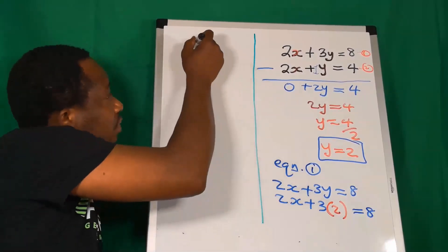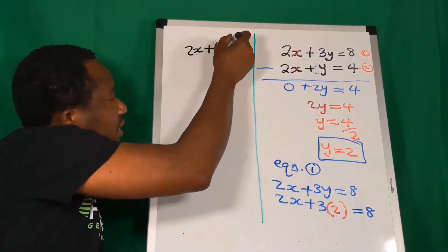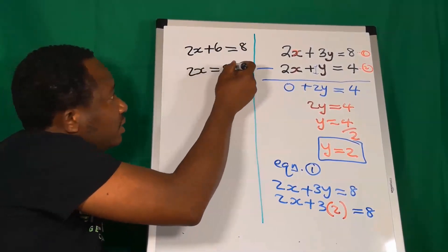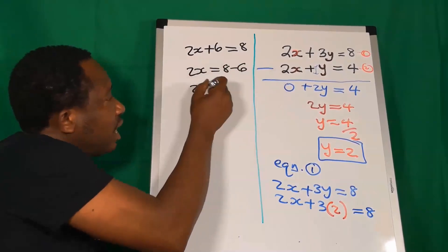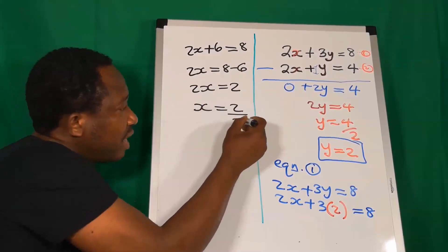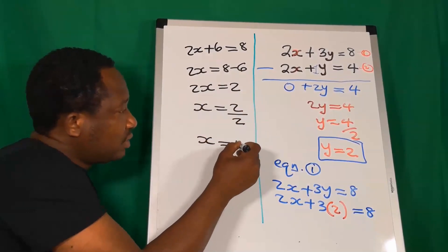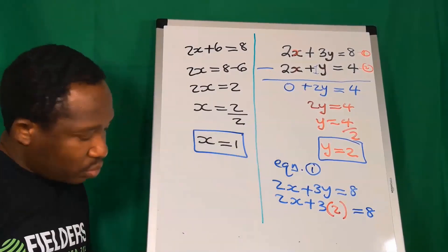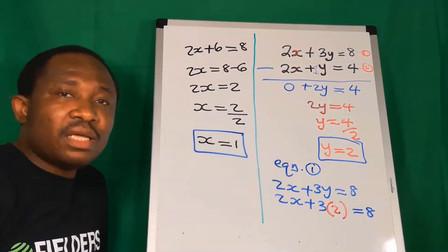Next, we have that 2x plus 6 is now 8. So 2x is 8 minus 6. And 2x is now 2. x is 2 divided by 2, and x is 1. You see, we have that x is 1 and that y is 2.